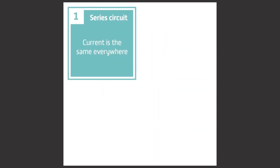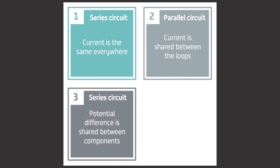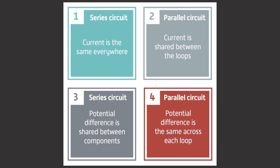In this pod we've learnt the following circuit rules. One: in a series circuit the current is the same everywhere. Two: in a parallel circuit the current is shared between the loops. Three: in a series circuit the potential difference is shared between components. Four: in a parallel circuit the potential difference is the same across each loop.